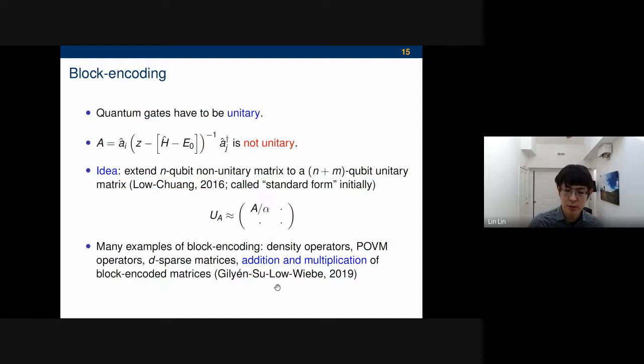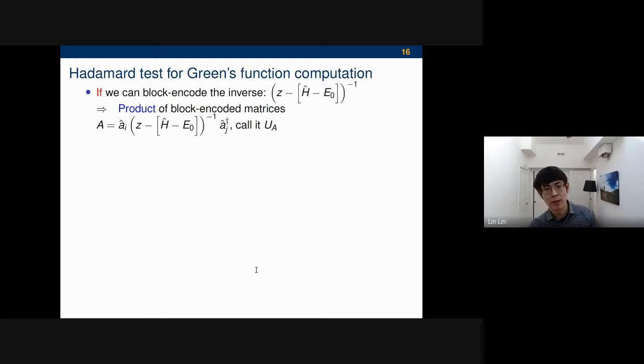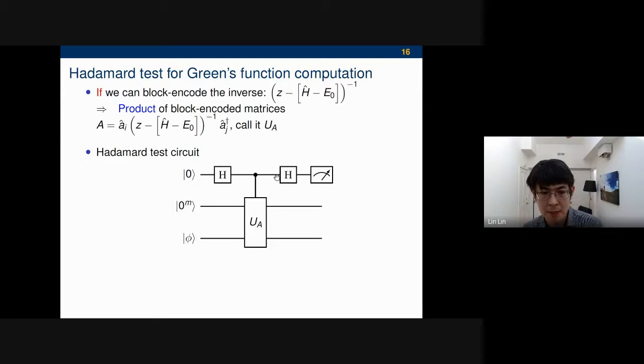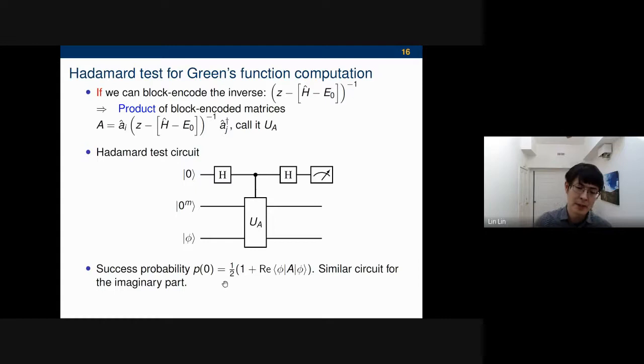The basic strategy of computing Green's functions on the quantum computer is that if you can block encode this big inverse, there's a big if, we need to talk about how to do that, but with the flavor of quantum linear system solver. Then we heard from Wenhao's talk that these are easy because you can use the Jordan-Wigner transformation, which essentially gives efficient block encoding for these two sparse matrices. You can product them together, so this becomes a whole thing that has an efficient unitary block encoding for the UA. Then you just run the Hadamard test.